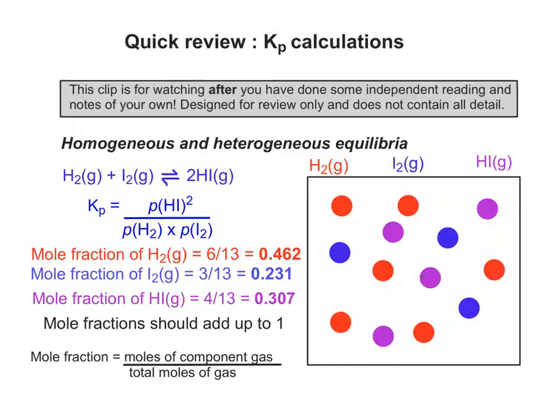Obviously I've done a little bit of rounding here, but if you were to take calculator values for 6 over 13, 3 over 13, 4 over 13, and add them up, you would get one. Why don't you pause the clip and try on your calculators to make sure that you're happy with that method.